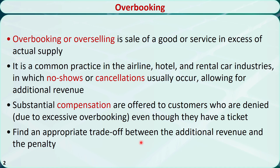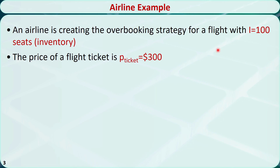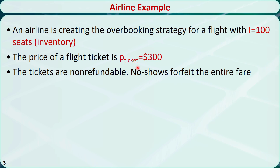Let's see an example. An airline is creating the overbooking strategy for a one-way flight with I equal to 100 seats — this is the inventory. The price of a flight ticket is $300. The tickets are non-refundable, so no-shows forfeit the entire fare.